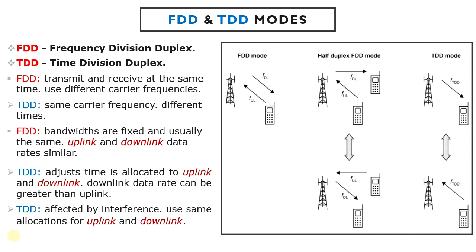FDD and TDD modes have different advantages and disadvantages. In FDD mode, the bandwidth of the uplink and downlink are fixed and are usually the same, making it suitable for voice communication in which the uplink and downlink data rates are very similar. In TDD mode, the system can adjust how much time is allocated to the uplink and downlink, making it suitable for applications such as web browsing in which the downlink data rate can be much greater than the uplink rate.